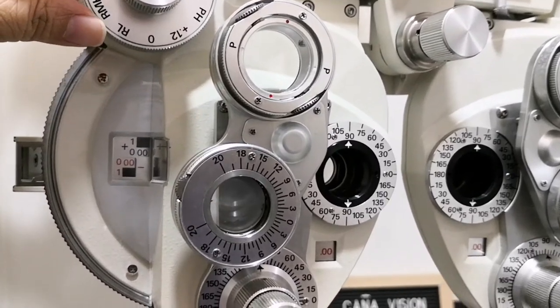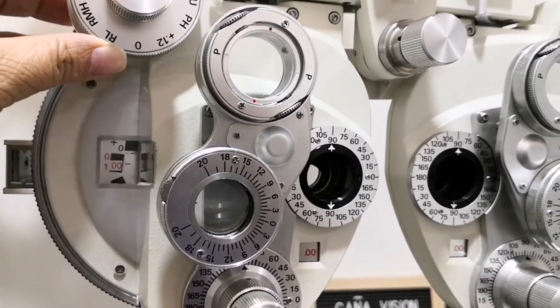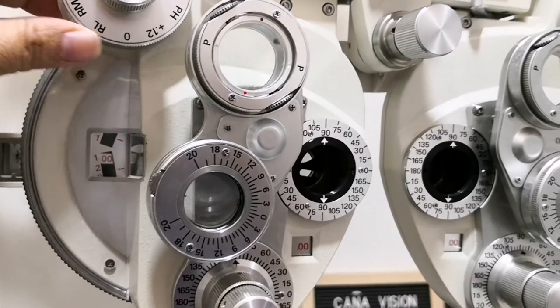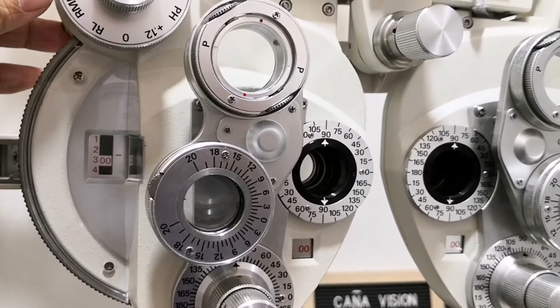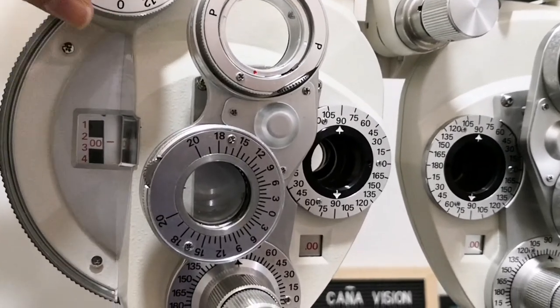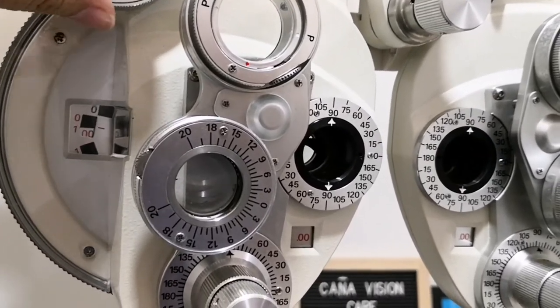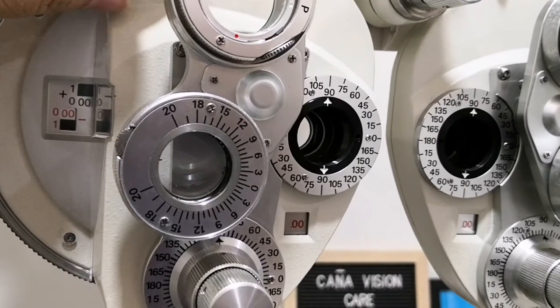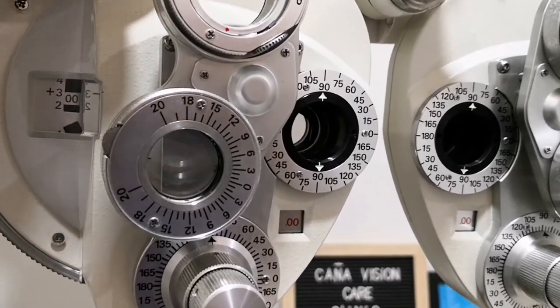And this is the strong spherical control. It differs from different phoroptor brands. For this brand, the increment is by three. The red colored numbers represent the minus lens and the black represents a plus lens.